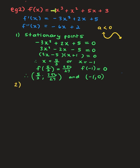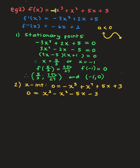For x-intercepts we let y = 0: -x³ + x² + 5x + 3 = 0. Multiplying through by -1: x³ - x² - 5x - 3 = 0. To factorize this cubic, we look at the factors of the constant: ±1, ±3. We substitute these into x to find which gives zero. Substituting x = -1: (-1)³ - (-1)² - 5(-1) - 3 = -1 - 1 + 5 - 3 = 0. So x + 1 is a factor.